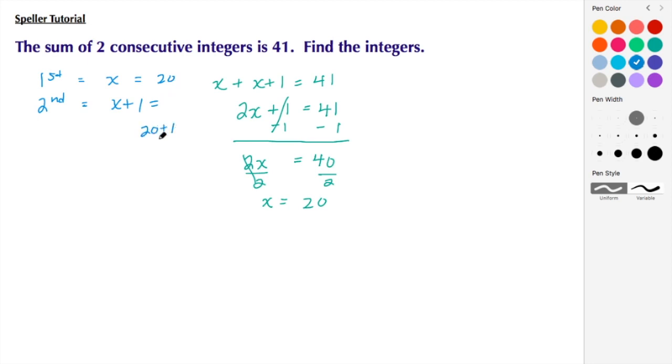plus 1 for the second one. So we see the second integer is 21. And to do a quick check, we know that 20 plus 21 gives us 41, so we know that we're correct.